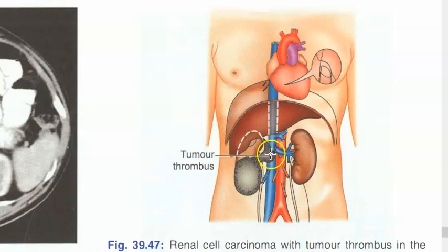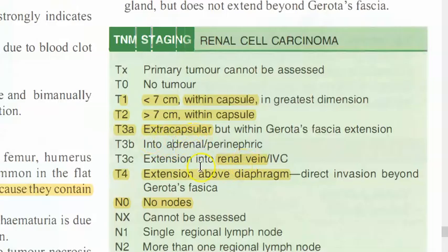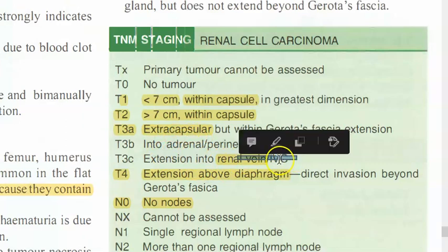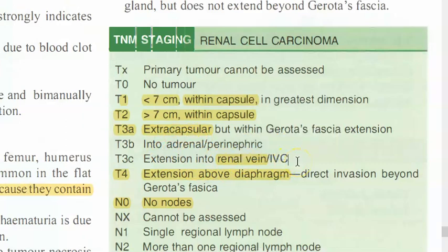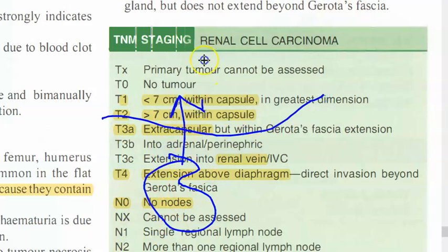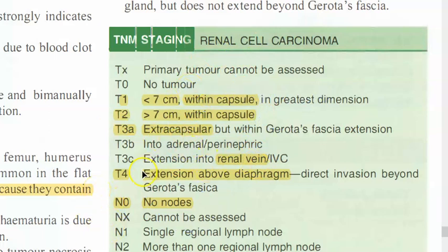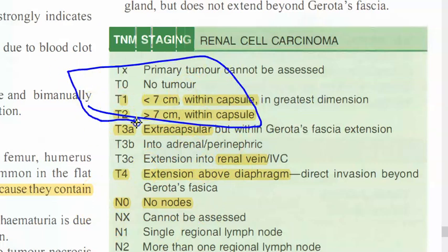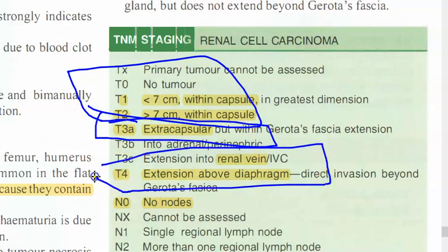Images show renal cell carcinoma with extension - a thrombus or tumor itself extending into the renal vein and IVC. T3 involves extracapsular extension into the renal vein and inferior vena cava. T4 is extension above the diaphragm or beyond Gerota's fascia. So: T1 - within capsule, less than 7 cm; T2 - within capsule, greater than 7 cm; T3 - extracapsular; T4 - extending above the diaphragm.